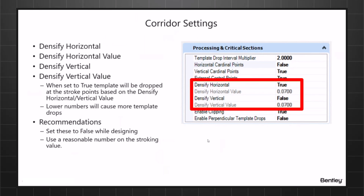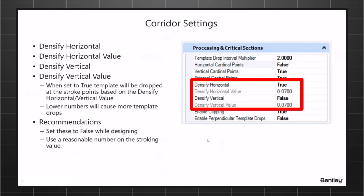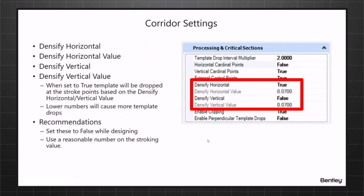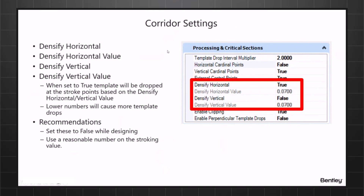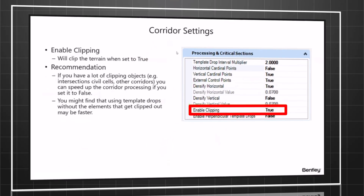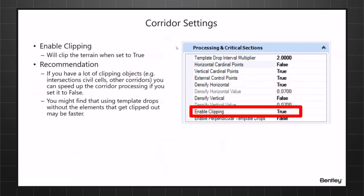If you have a very curvy alignment — both horizontally and vertically — with these densify settings set to true, you can get a lot of template drops through those areas. You can set them to false while designing, then turn them back to true when you want densification for your final model. Use a reasonable stroking value — 0.05 or 0.01 should be fine, but going down to 0.005 can put a huge number of template drops around your curves and really affect performance.